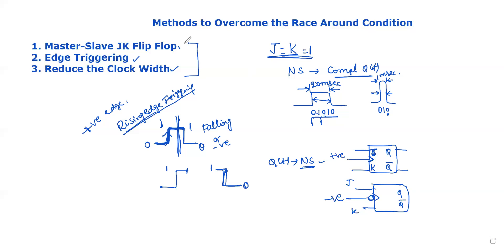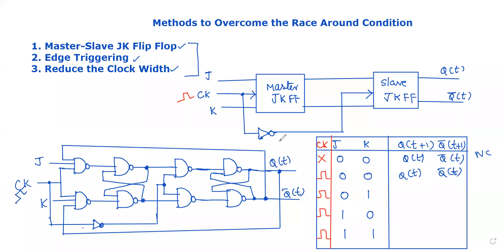Next is the Master-Slave JK flip-flop. This is the block diagram of the Master-Slave JK flip-flop. It consists of two parts: the Master JK flip-flop and the Slave JK flip-flop — two different sections at different levels.